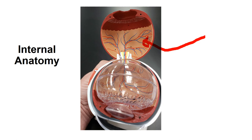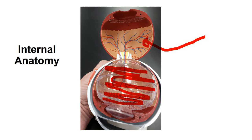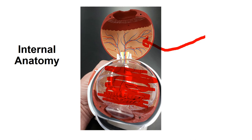Here you can also see the posterior chamber, which I'm highlighting now. This would contain lots of vitreous humor and be very gelatinous. Our aqueous humor — shown here — would be in the anterior region and filled with a much more watery fluid.